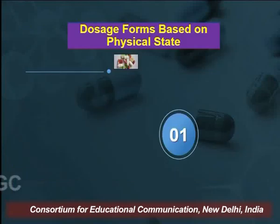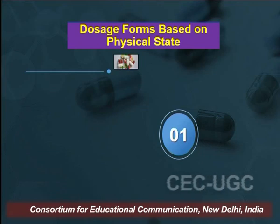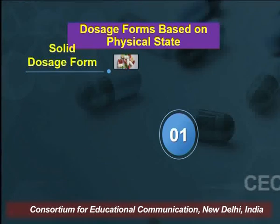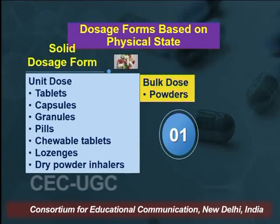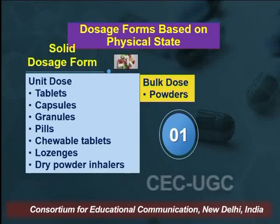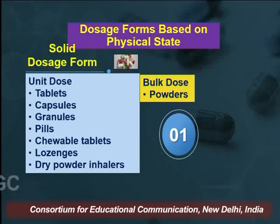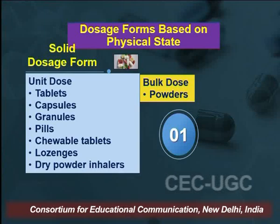Looking into the first basis of classification — based on physical state — we have solid dosage forms, which include unit dose and bulk dose. Unit dose covers tablets, capsules, granules, pills, chewable tablets, lozenges, and dry powder inhalers. Under bulk dose, we have powders.